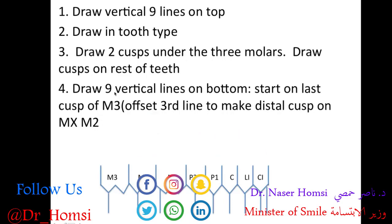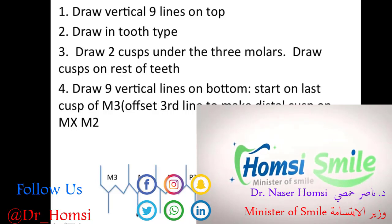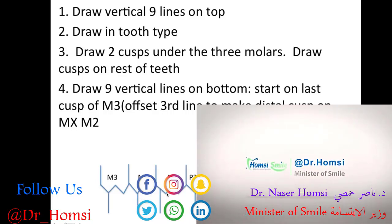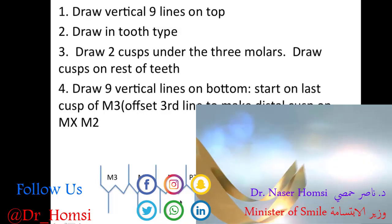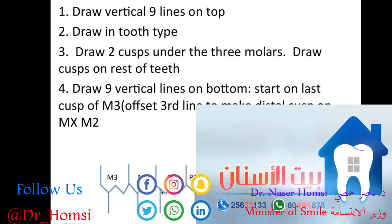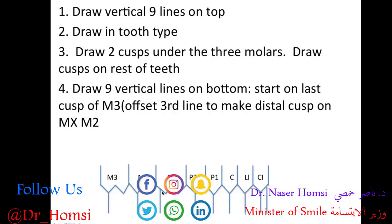The next step is to draw another nine vertical lines on the bottom, starting at the third molar. There is an exception to this rule: traditionally each line comes down off of a cusp, so you draw a straight line and come over two cusps for the third molar, then the third line is pushed off to the distal a little bit — this is going to be the first molar, representing the distal cusp.